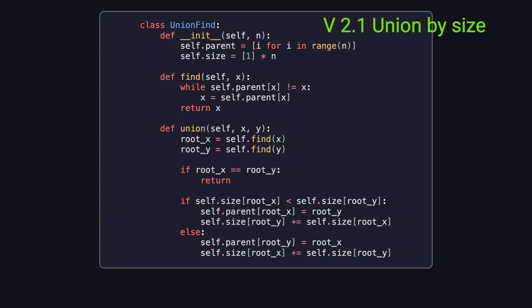Next is version 2.1, where we switch to the union by size optimization. Compared to version 2.0, instead of tracking the height with a rank array, we now track the number of elements in each tree using a size array. If you're interested, feel free to pause the video and take a closer look at how the union function merges sets based on size.